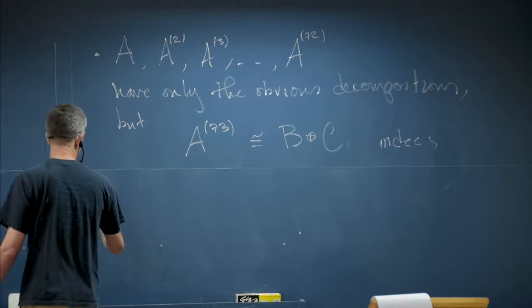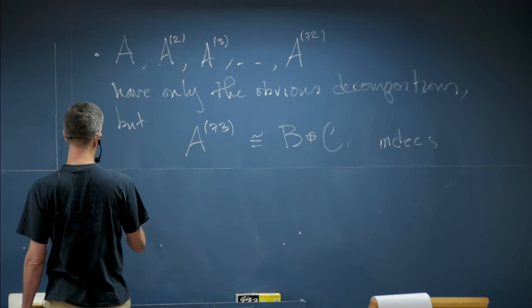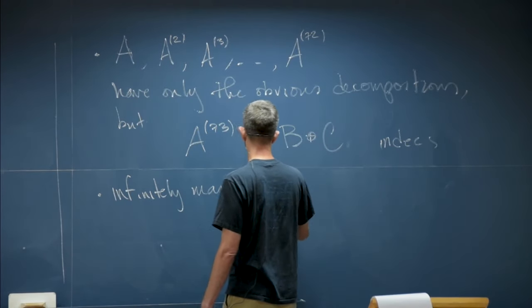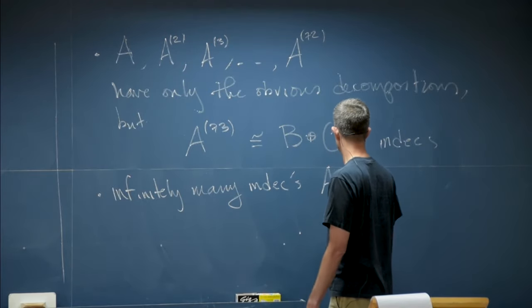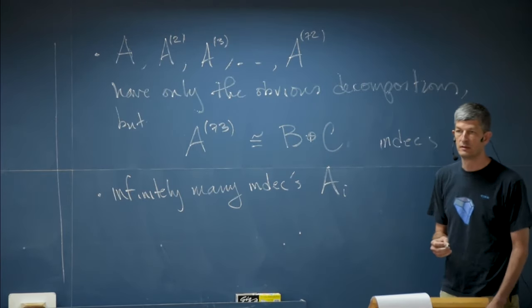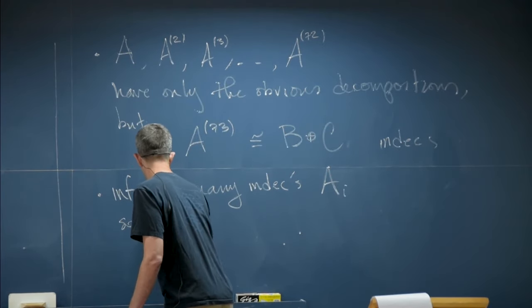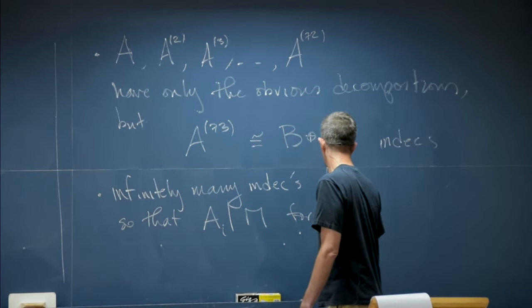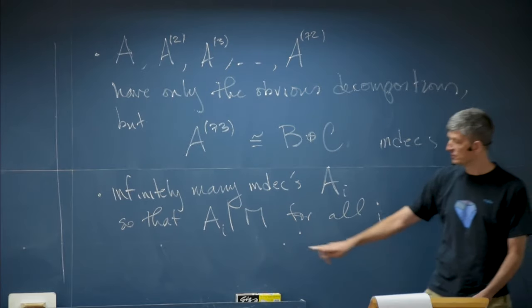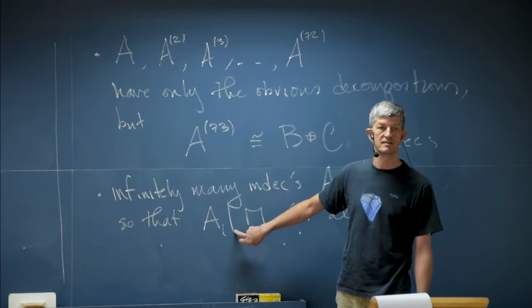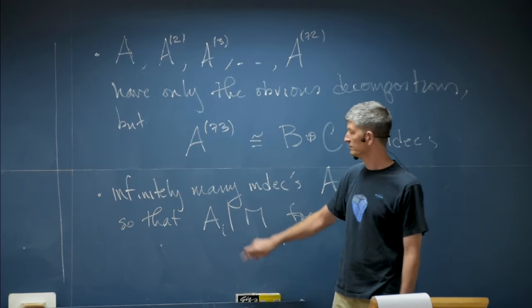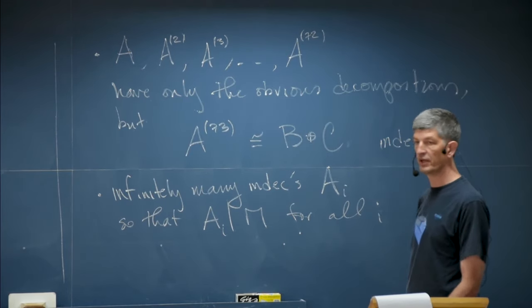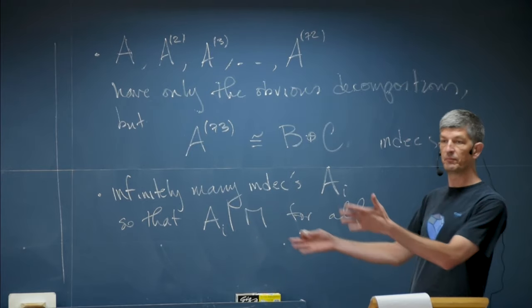Or, finally, one last one to guide us. Could we have infinitely many indecomposables, let's call them A_I, so that A_I divides M for all I. Remember, this is my notation for is isomorphic to a direct summand of.